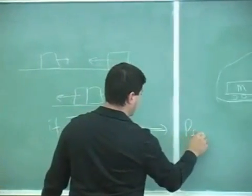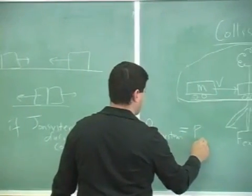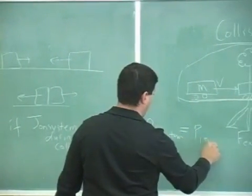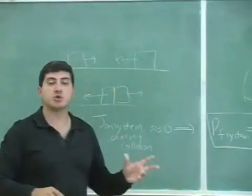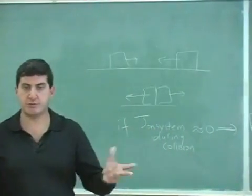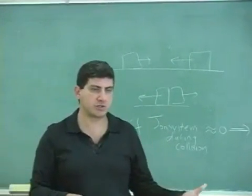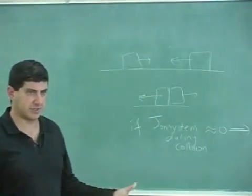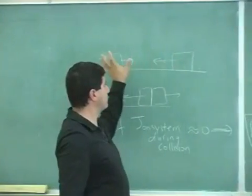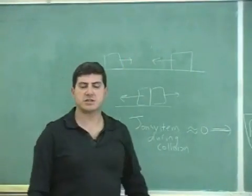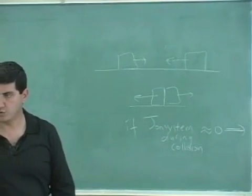Then the momentum of the system can be assumed to be constant — the final momentum of the system can be assumed to be about the same as the initial momentum of the system. That's what we're going to assume in pretty much all the problems we solve: collisions are happening and friction is not doing a considerable impulse, so the momentum after the collision equals the momentum before.